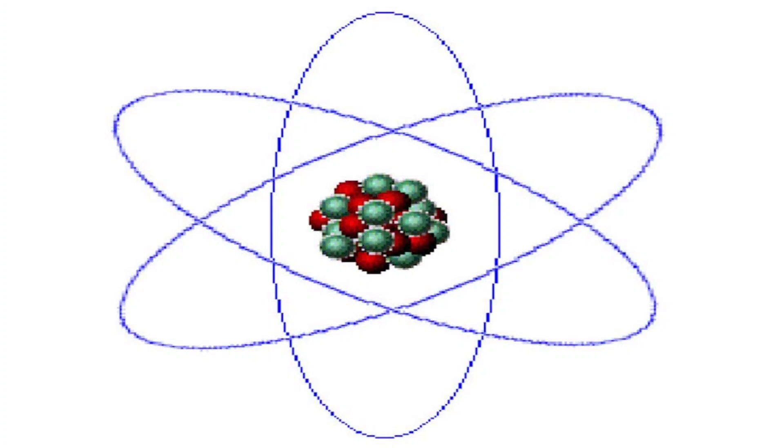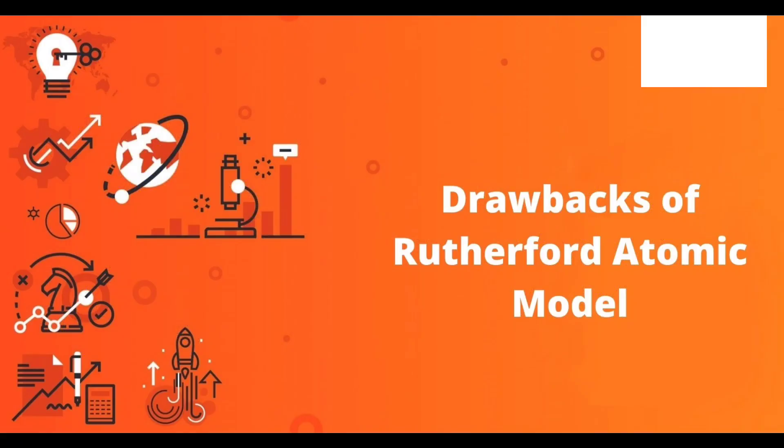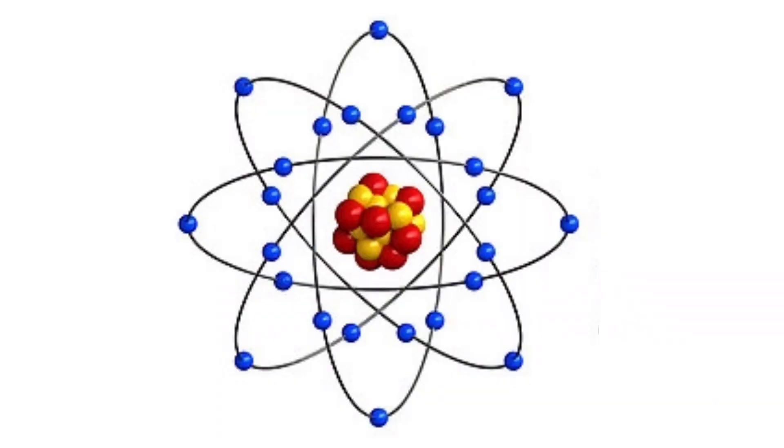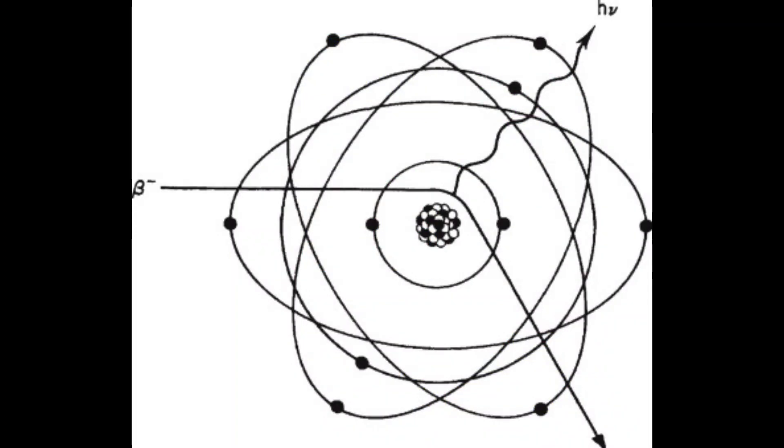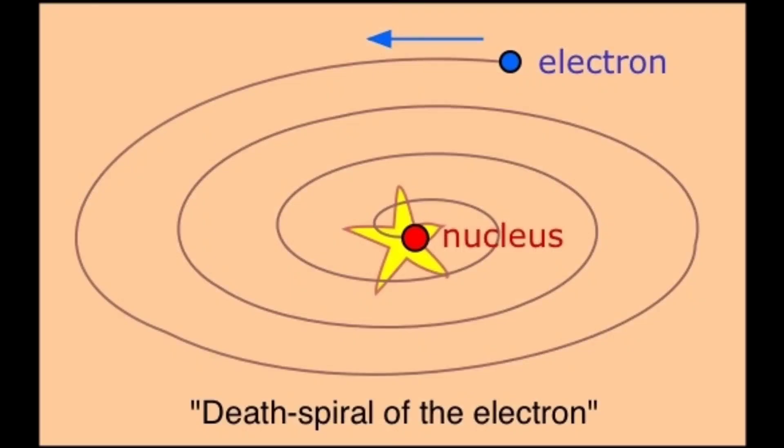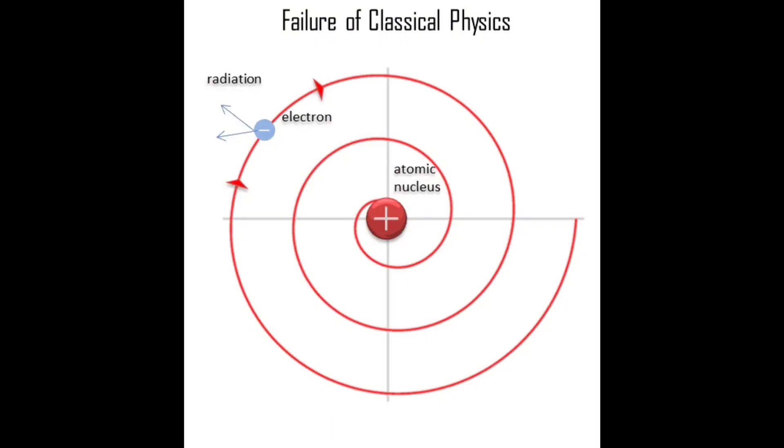Now although the Rutherford atomic model was based on experimental observations, it failed to explain certain things. Number one, Rutherford proposed that the electrons revolve around the nucleus in fixed paths called orbits. According to Maxwell, accelerated charged particles emit electromagnetic radiations and hence an electron revolving around the nucleus should emit electromagnetic radiation. This radiation would carry energy from the motion of the electron which would come at the cost of shrinking of orbits. Ultimately the electrons would collapse in the nucleus. As per the Rutherford model, an electron would collapse in the nucleus in less than 10 to the power minus 8 seconds.